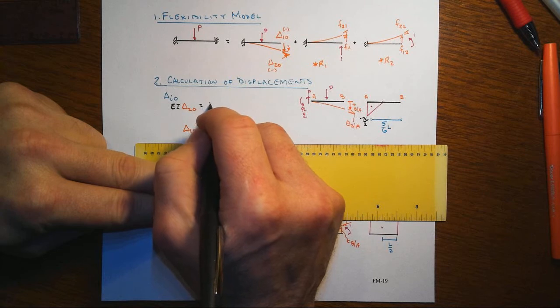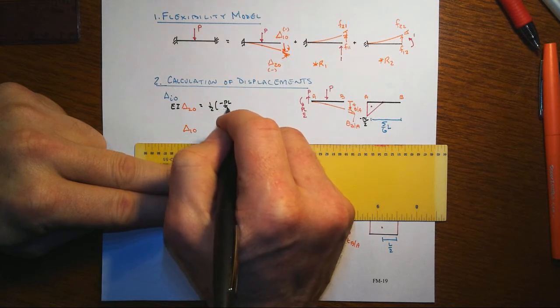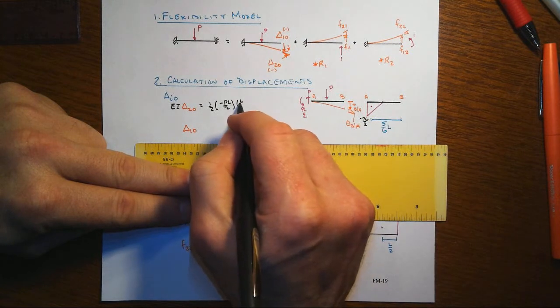That's a triangle, so we've got one half of minus PL over 2 times then L over 2, and that would be minus then PL squared over 8EI for that displacement.